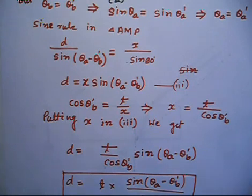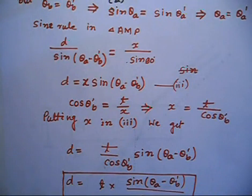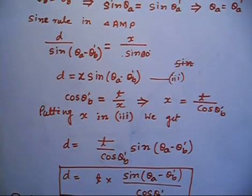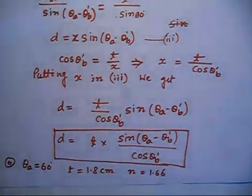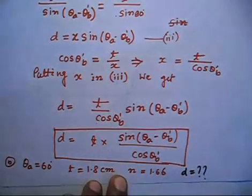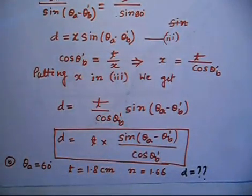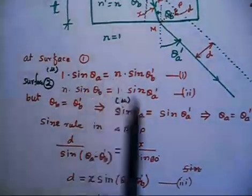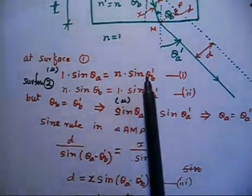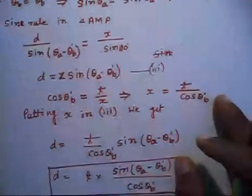So d equals t divided by cos theta_b' times sine(theta_a minus theta_b'). Note that theta_b' is the same as theta_b. If we know theta_a and theta_b', we can calculate the lateral displacement. Generally we know theta_a, but we do not know theta_b'. So we apply Snell's law from equation 1 to find theta_b'. Sin theta_a is known, n is known — in this case it is 1.66 — so we get sine theta_b' and then theta_b'. Plugging that value in, we get d. You can use a calculator; sin theta_b will come out to some value — approximately 30, 40, or 20 degrees — or do the exact calculation.